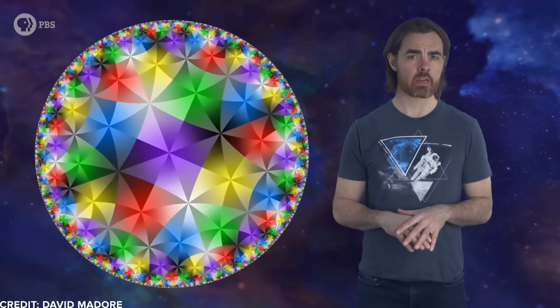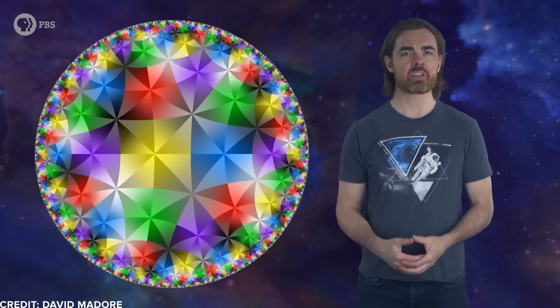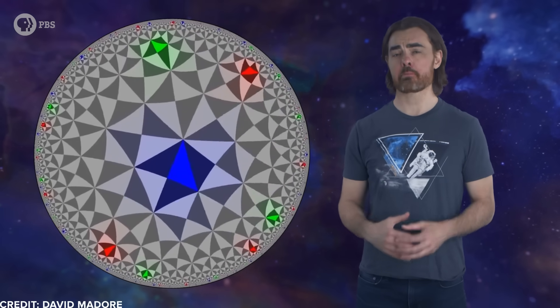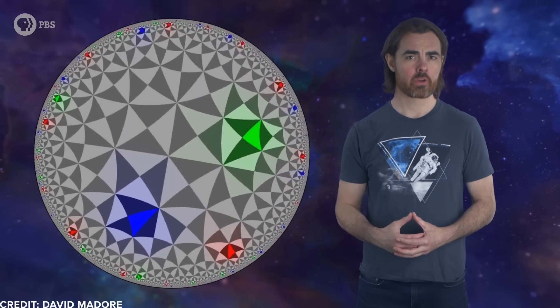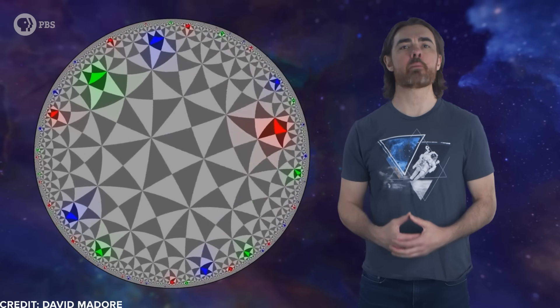So this disk can represent an infinite anti-de-sitter universe with two spatial dimensions at a single instant in time. Each tile represents the same size region of space – perhaps our observable universe. The boundary is infinitely far away and looks the same no matter where we travel.